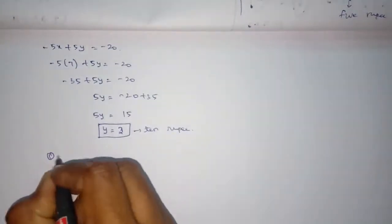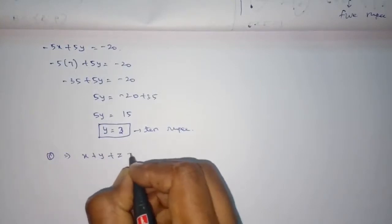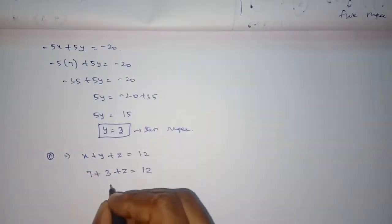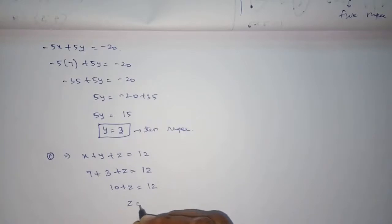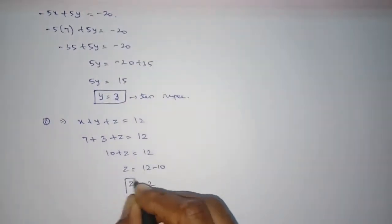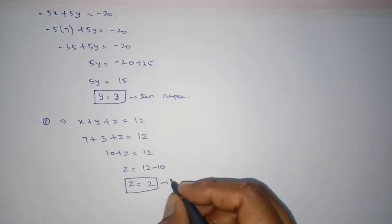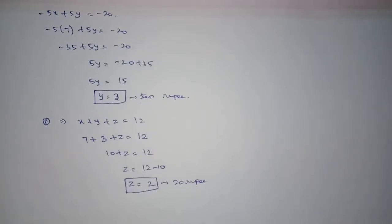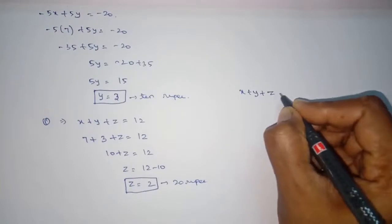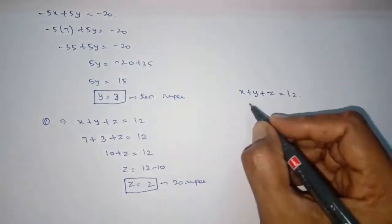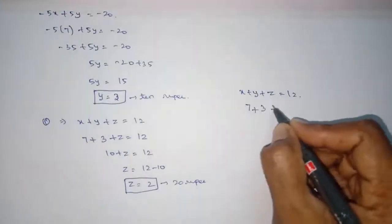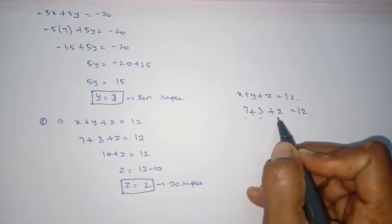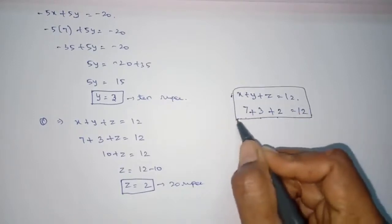Now substituting X and Y values into the first equation: X plus Y plus Z equals 12. X equals 7, Y equals 3, so 7 plus 3 plus Z equals 12, giving 10 plus Z equals 12, so Z equals 2. There are 2 twenty-rupee notes. Verification: 7 plus 3 plus 2 equals 12. Correct — solution verified by self-check.